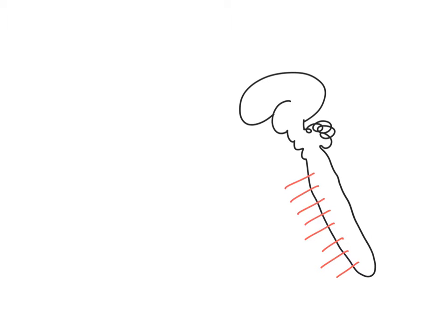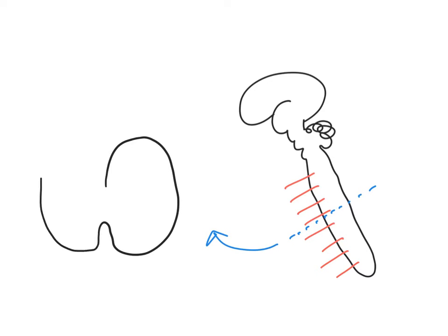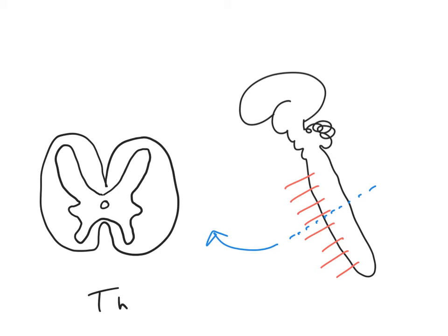Now if we take a cross section through the spinal cord, say at around about this level here, we see something a bit like this - a transverse section. Let's say for the sake of argument that this is at the thoracic level. Here is the central canal of the spinal cord and I'm drawing in the grey matter: the dorsal horn, the lateral horn, the ventral horn, the lateral horn and the dorsal horn - that butterfly shape.